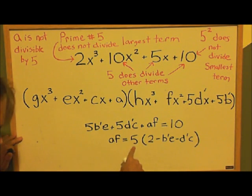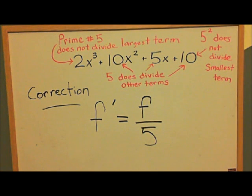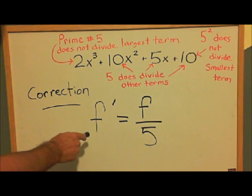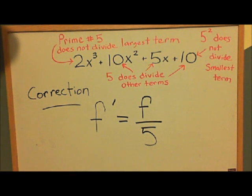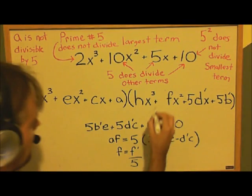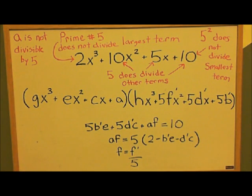Again, we have a 5 on this side, so one of these two has to be divisible by 5. And again, a is not divisible by 5. Correcting a typo from the original video, we should have f prime equals f divided by 5. And we'll put the 5f prime up here.